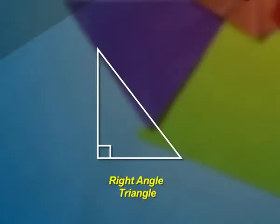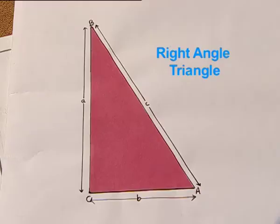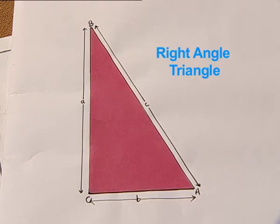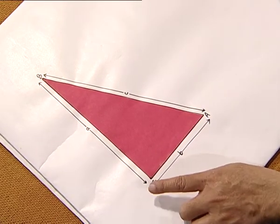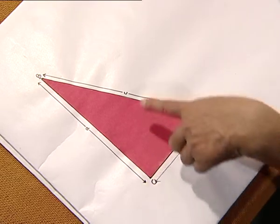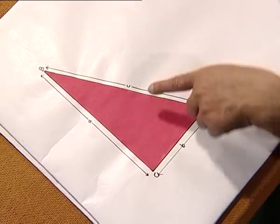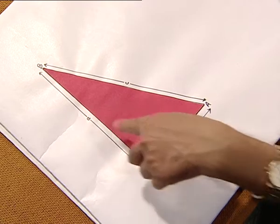These four replicas are congruent to each other. Let us name this right angle triangle as ABC, where the length of the hypotenuse is c.